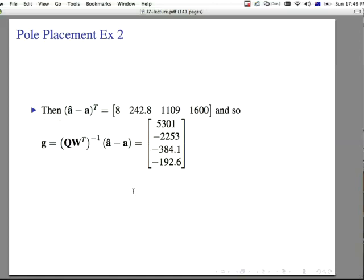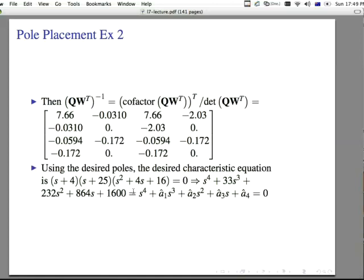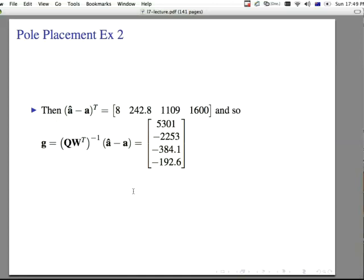So we have the desired characteristic equation and we have the original characteristic equation, the one we have right now. And we have the vectors a hat minus a, we can find. And the result is 8, 242.8, 1109, 1600, transposed so we can write it in a row. And multiply this whole thing out and that gives us our g matrix. The g matrix is 5301, minus 2253, minus 384.1, minus 192.6. That's our gain matrix to place the poles where we want them.